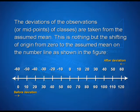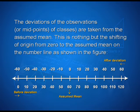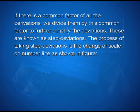This is nothing but the shifting of the origin from 0 to the assumed mean on the number line, as shown in the figure. You can see values 0, 10, 20, 30, ranging till 120 before the deviations. When we assume 60 as the mean, the corresponding values become 10, 20, 30, 40, 50 on one side and minus 10, minus 20, minus 30, minus 40, minus 50, minus 60 on the other side after deviation. If there is a common factor of all the deviations, we divide them by this common factor to further simplify the deviations. These are known as step deviations.